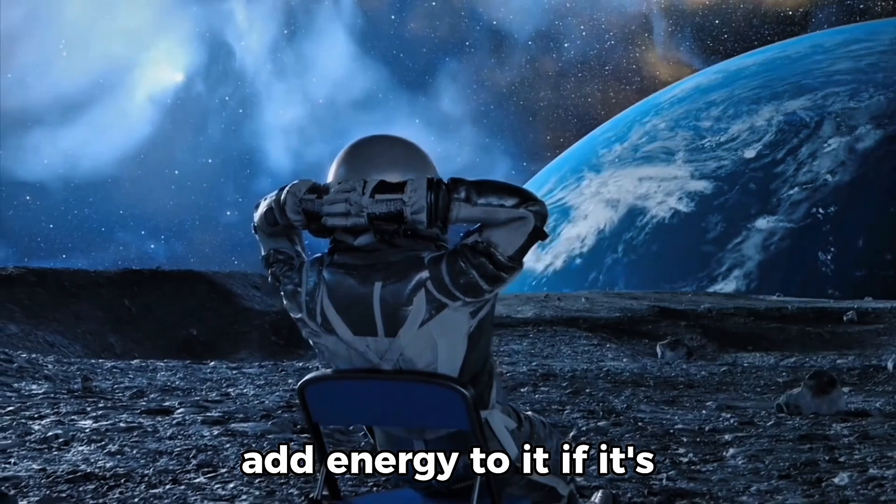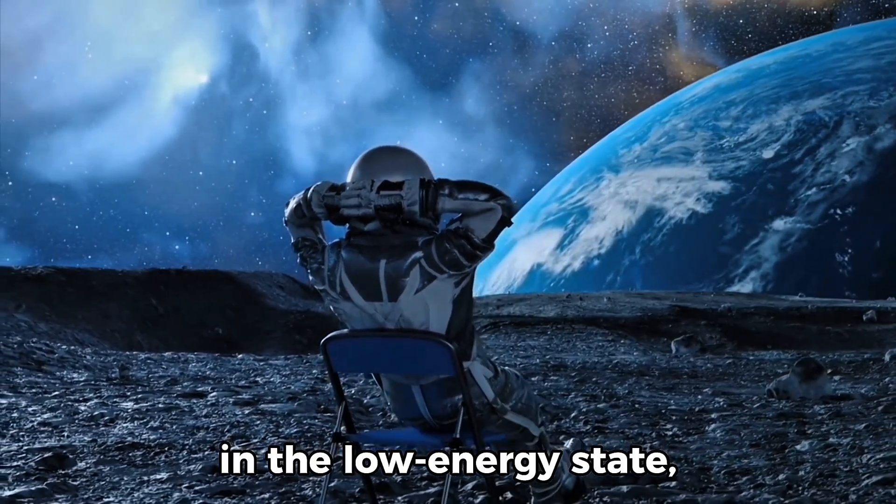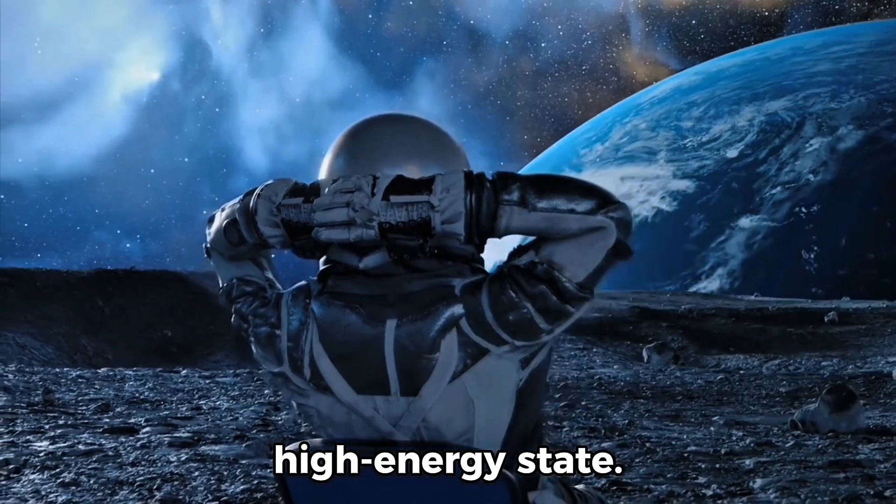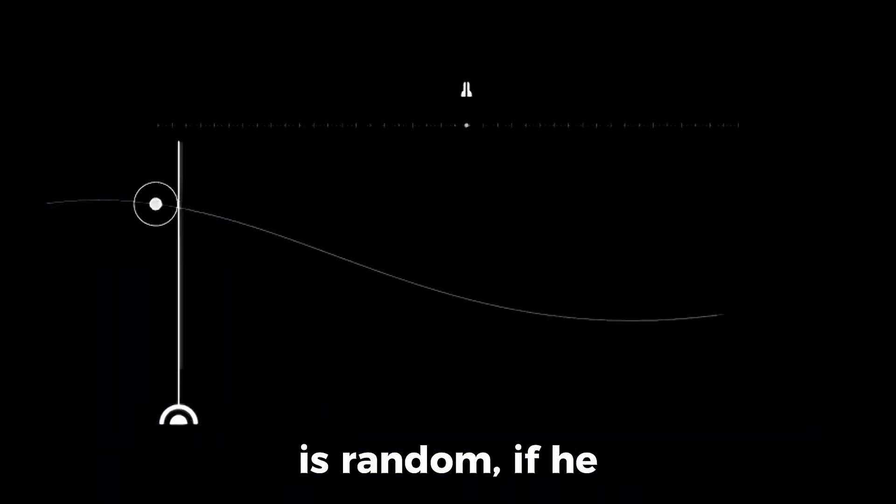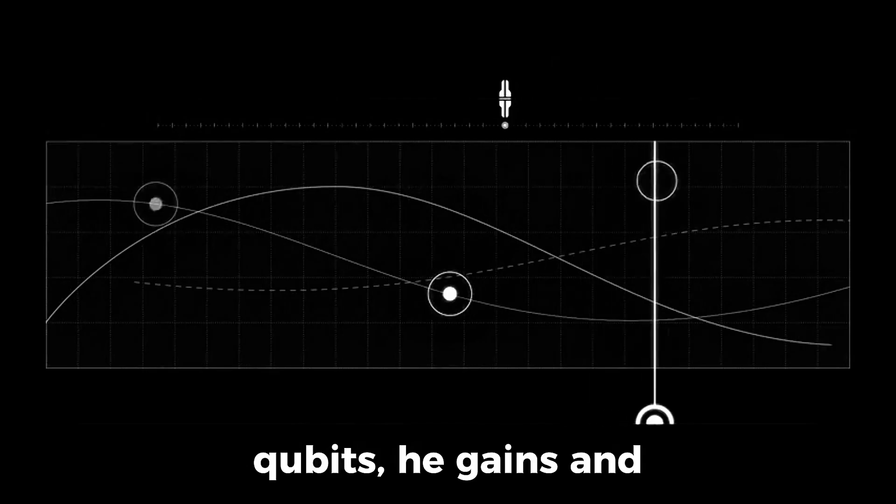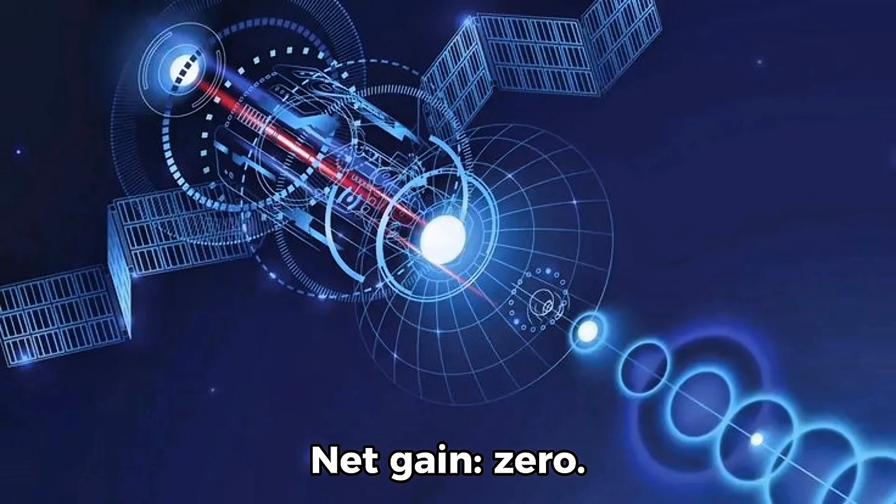he either has to add energy to it if it's in the low-energy state, or he can extract energy from it if it's in the high-energy state. But because the spin is random, if he measures all ten qubits, he gains and loses energy equally. Net gain? Zero.